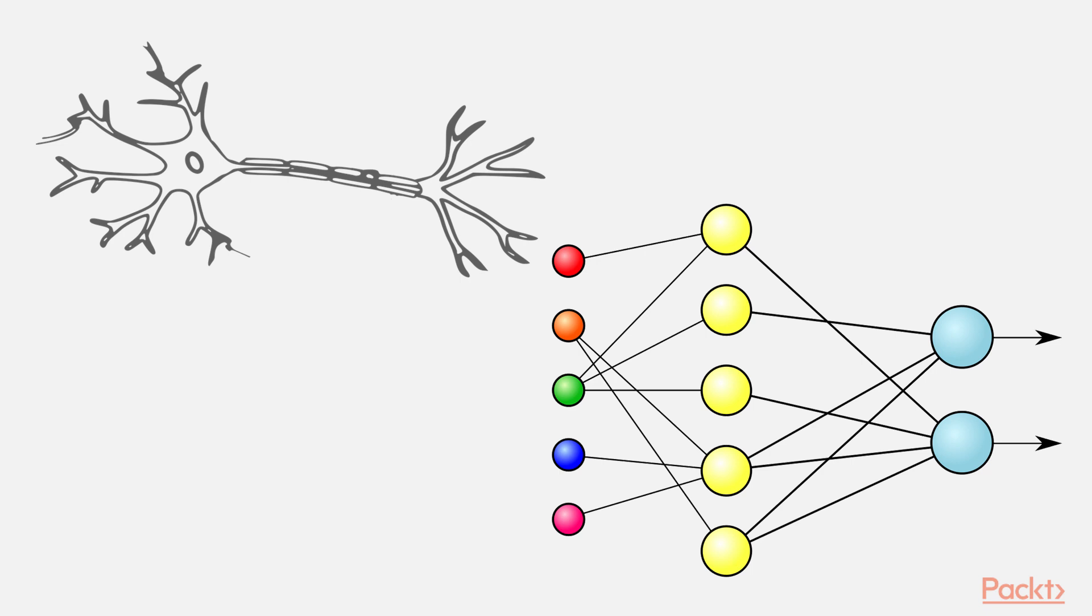Let's start with the perceptron. An individual neuron can be thought of as a computational unit that processes one or more inputs to produce an output. A perceptron functions analogously to a neuron. It accepts one or more inputs, processes them and returns an output.